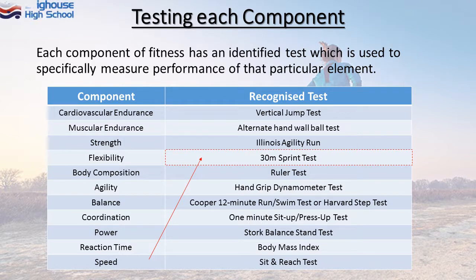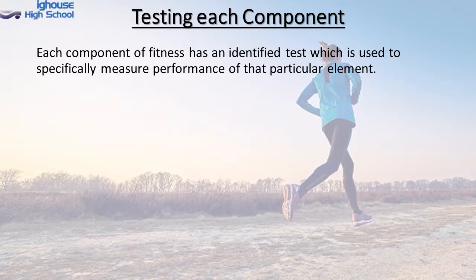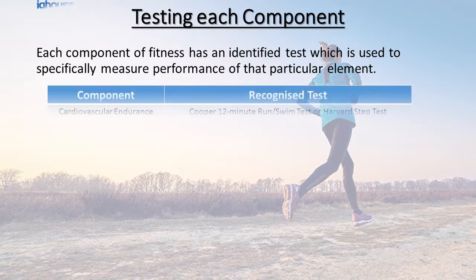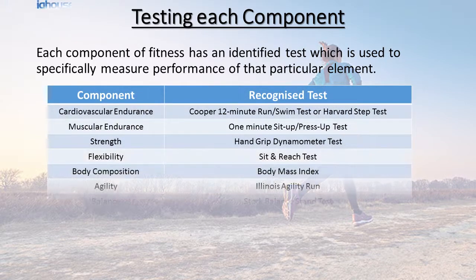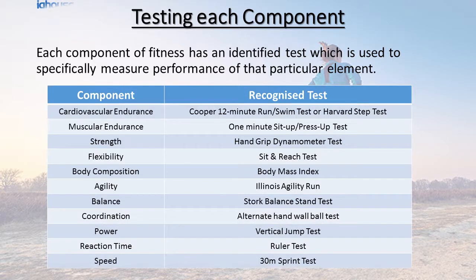Others are slightly more difficult. Pause the video now and see if you can match the components to the recognised test based on what's in front of you. Having given that a go, let's see how you did. The components and the recognised tests have now been matched up, starting at the top with cardiovascular endurance, measured using the Cooper 12 minute run or the Cooper 12 minute swim, all the way down to speed, which is measured using the 30 metre sprint test.